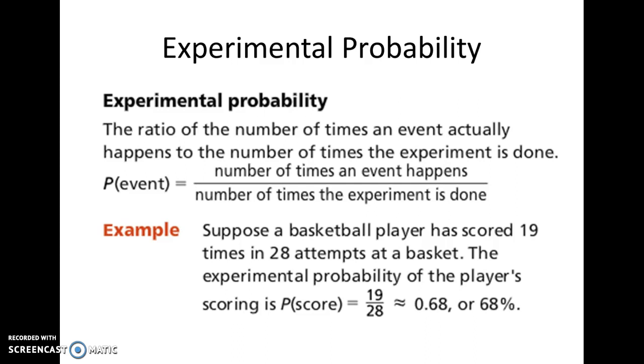So the first part, experimental probability is the ratio. It's the number of times an event happens over the number of times the experiment is done.